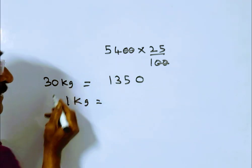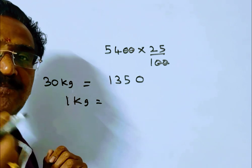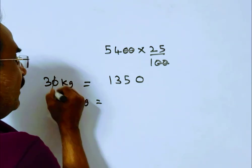For 1 kg of rice, the reduced price is 1350 divided by 30, which equals 45 rupees. Friends, we want the original price. What is the reduction?